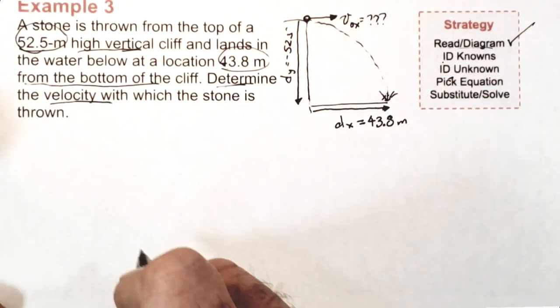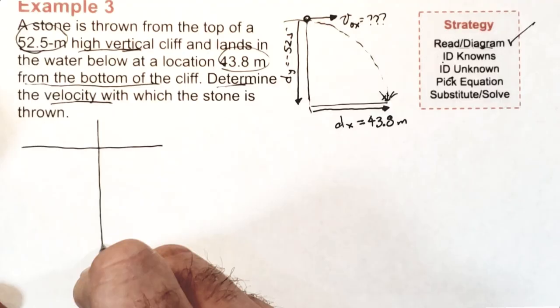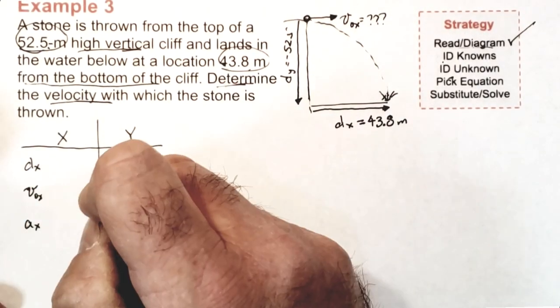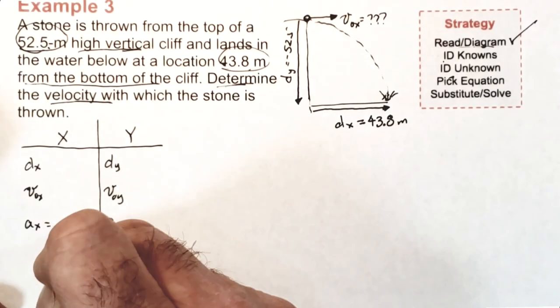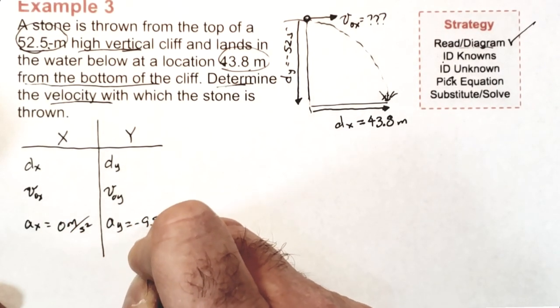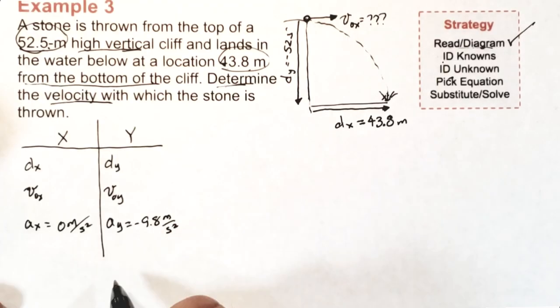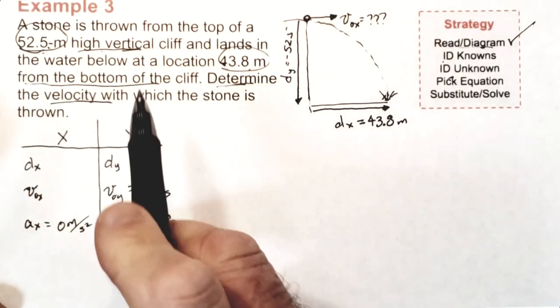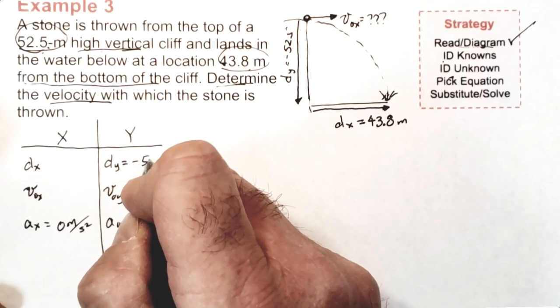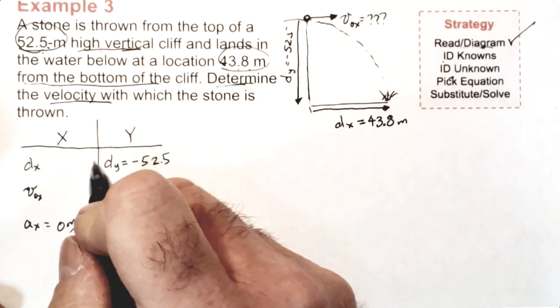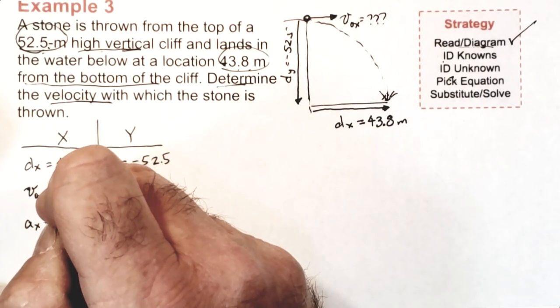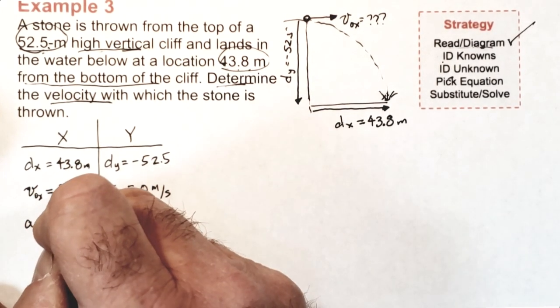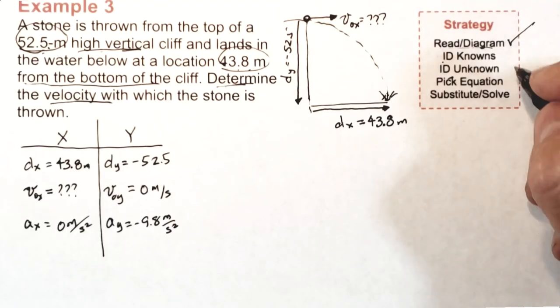As you do steps 2 and 3, you'll use an XY table. In the table include DX and DY, VOX and VOY, AX and AY. Put the usual numbers for AX and AY, 0 and negative 9.8 meters per second squared. For VOY, it's 0 since this projectile is horizontally launched. There's two numbers in the problem statement. They're both distances. Put them in the appropriate place. The 52.5 meters is negative because the stone is falling downwards. 43.8 is the DX value. We're trying to find what the VOX is. Once you're done with the XY table, you're ready for step 4.